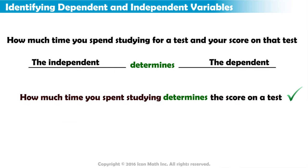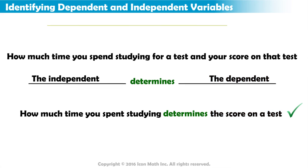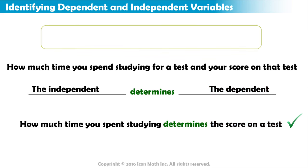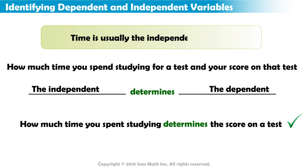So, the amount of time you spent studying is the independent variable and the score on the test is the dependent variable. One rule of thumb to follow is that time is usually the independent variable.